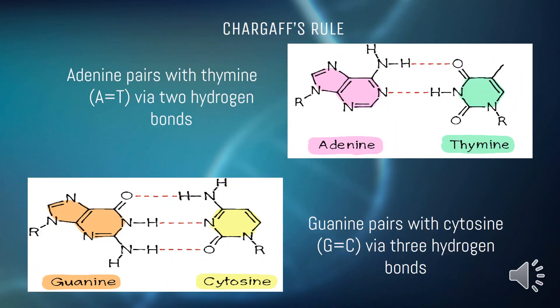Nucleotide bases connect through hydrogen bonds. It's important to know that the bases always pair up with the same partners. Erwin Chargaff, an Austrian-born biochemist, discovered that the number of nitrogenous bases in DNA was present in equal quantities — that is, a 1-to-1 stoichiometric ratio of purine and pyrimidine bases — meaning A plus G equals T plus C, and specifically A binds with T and G binds with C.